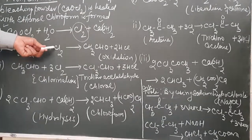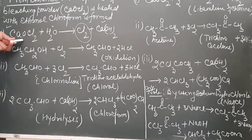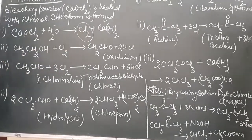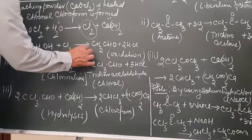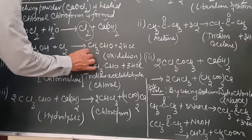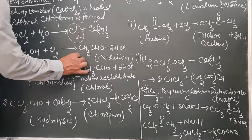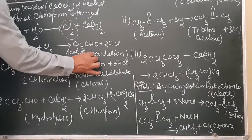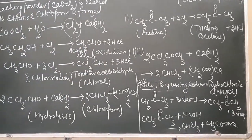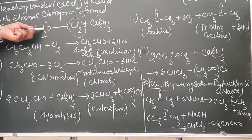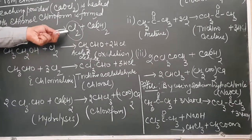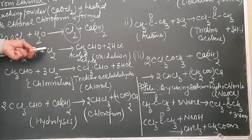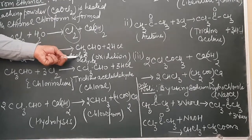The chlorine, first of all, oxidizes ethyl alcohol to acetaldehyde. Ethanol is the starting material and acetaldehyde is formed. So bleaching powder, when dissolved in water, liberates chlorine, and chlorine will act on ethyl alcohol as an oxidizing agent to form acetaldehyde.